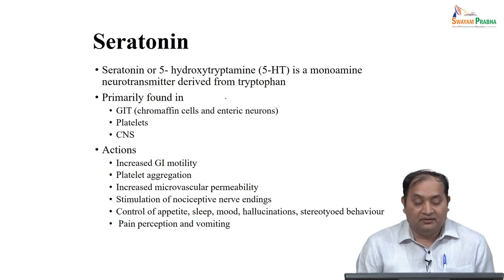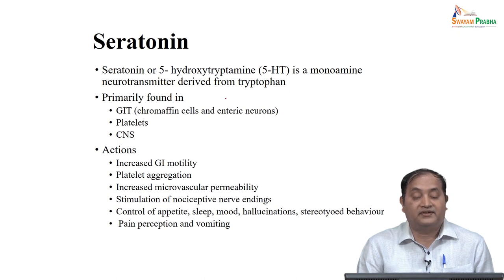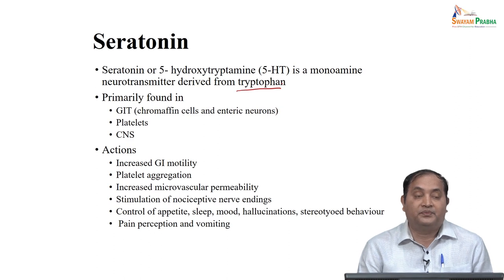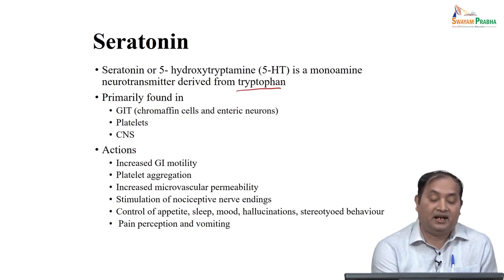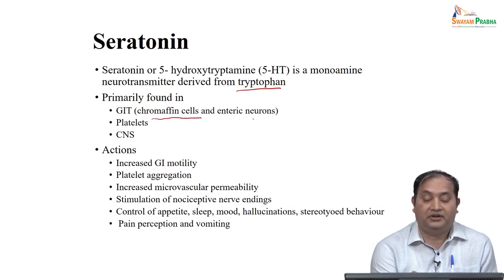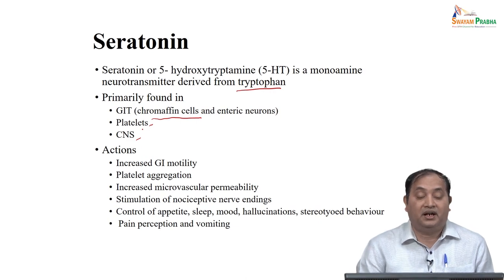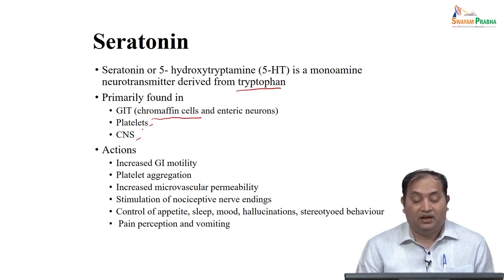After histamine, one of the compounds very commonly discussed is serotonin, also called 5-hydroxytryptamine. It is basically a monoamine neurotransmitter and is synthesized from tryptophan. Primarily, serotonin is found in the gastrointestinal tract, specifically in chromaffin cells or enteric neurons. Serotonin is also present in platelets and the CNS, where it mediates many functions and has various pharmacological actions.